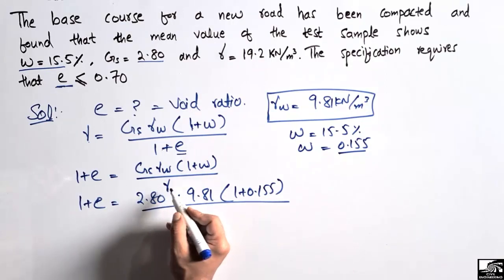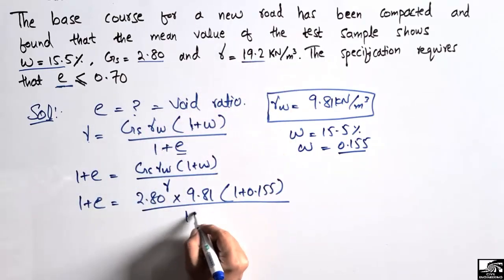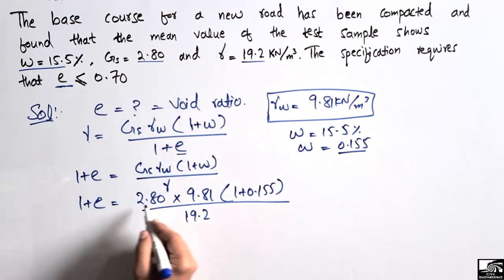Dividing by γ which is 19.2, also given to us. By solving this we get 1.65.